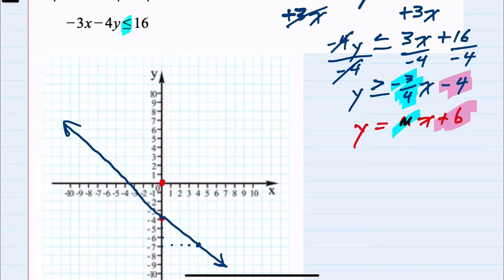Plugging that value into the original equation: -3(0) - 4(0) ≤ 16. The question is: is this a true statement?